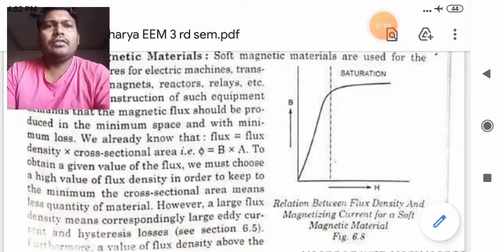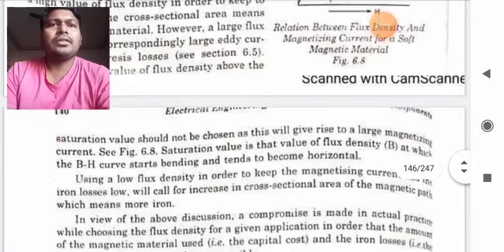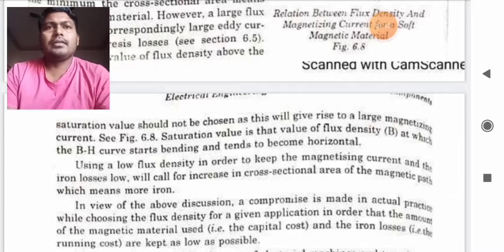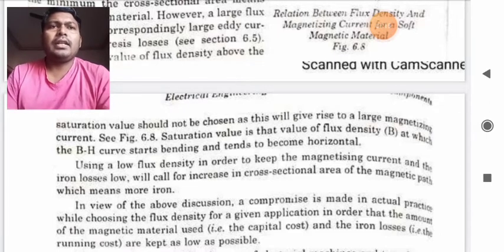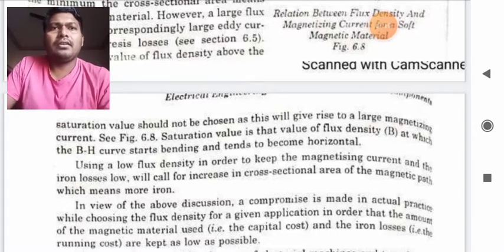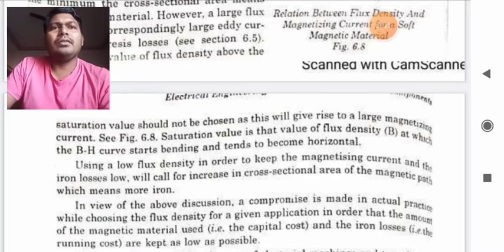Furthermore, a value of flux density above the saturation should not be chosen as this will give rise to large magnetizing current. In the diagram, saturation value is that value of flux density at which BH curve starts bending and tends to become horizontal.